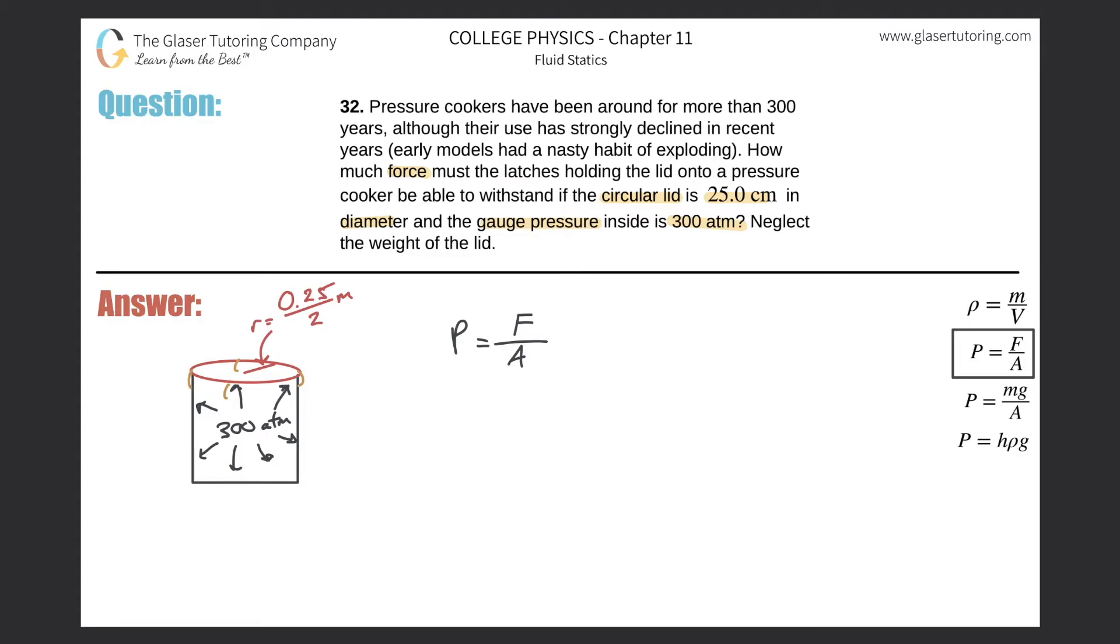In any case, so in order to find the force here in the formula, right, we need to just take the pressure multiplied by the area. So in terms of the gauge pressure here, that's basically the pressure that's inside and that is unbalanced by the atmospheric pressure.